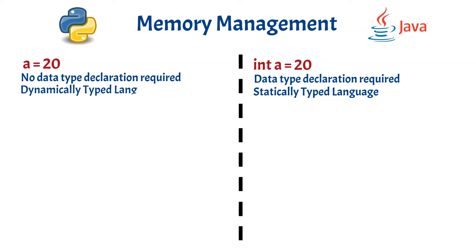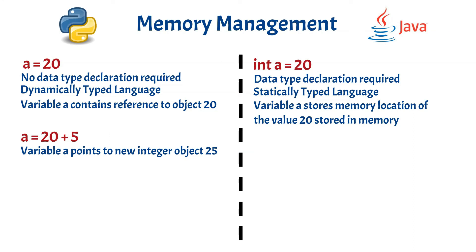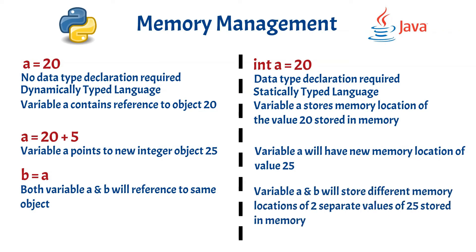Also remember that in Python, the variable a contains the reference to integer object 20, whereas in Java, the variable a will store the actual memory location of the value 20. Now if we add 5 to the variable a, then in Python, the variable a will start pointing to a new integer object in the heap memory with the value 25. Whereas in Java, a new memory location with the value 25 will get stored in the variable a. Also, when we write b = a, then in Python both variables a and b will reference the same integer object 25 in the heap memory, whereas in Java, a and b will have two different memory addresses stored for two different locations in the memory where 25 is stored.